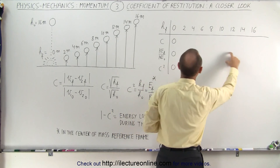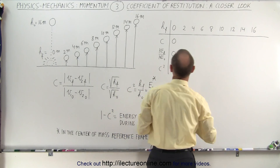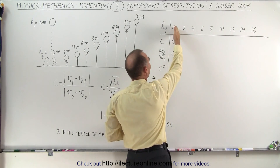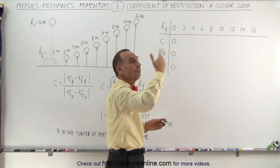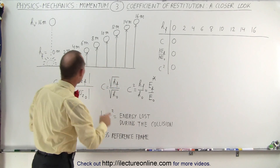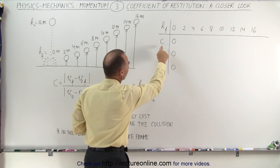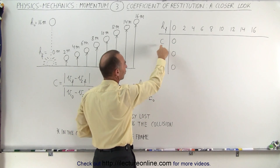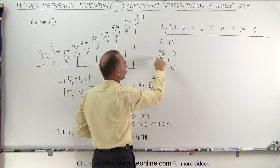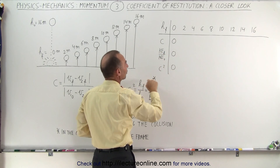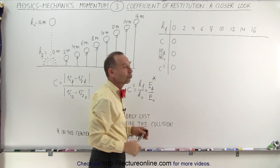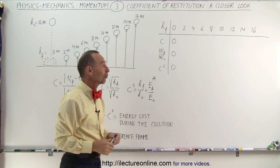This row here will be easy to fill out. If the ball does not return back in the air — if all the energy is lost — then the coefficient of restitution is zero, the ratio of the final to initial energy is zero, and the coefficient of restitution squared is zero as well.